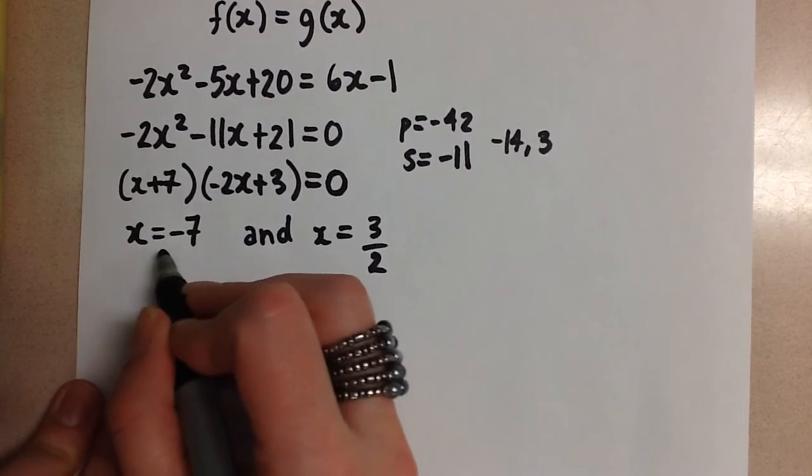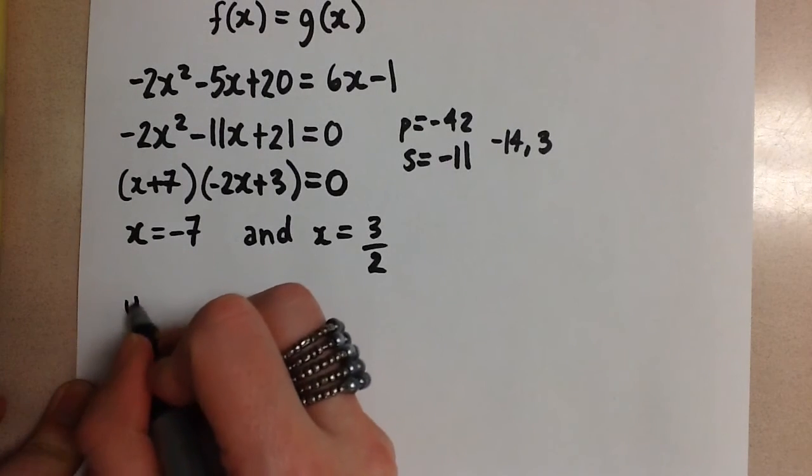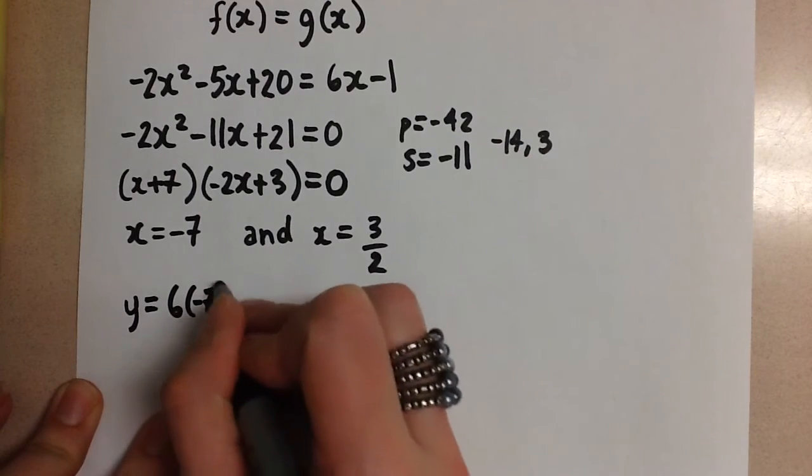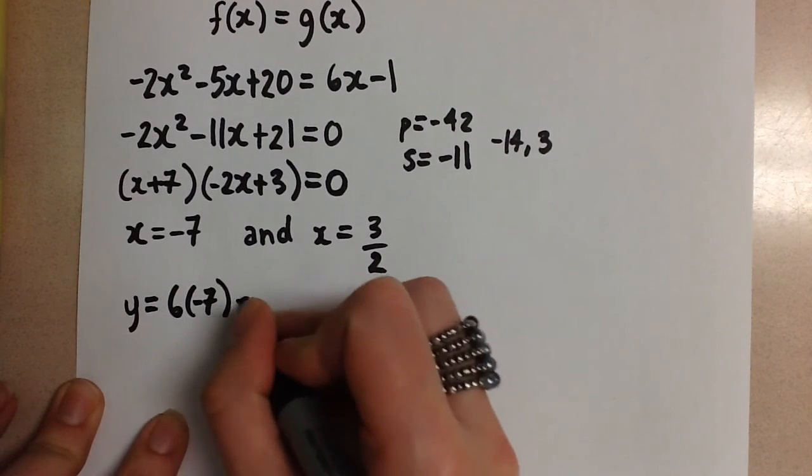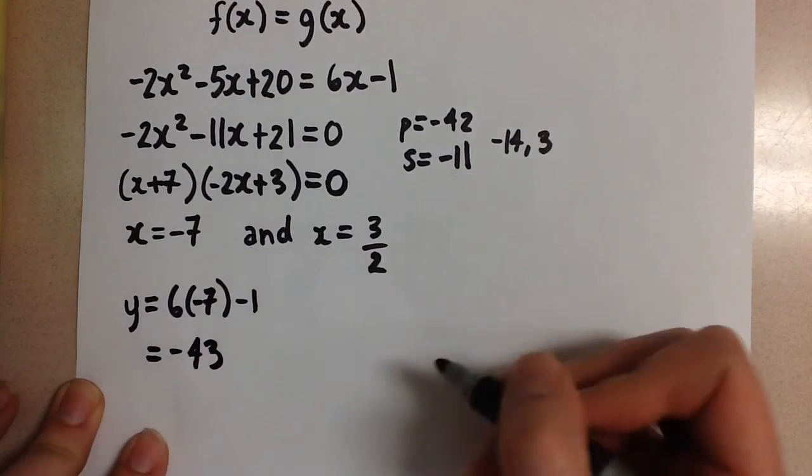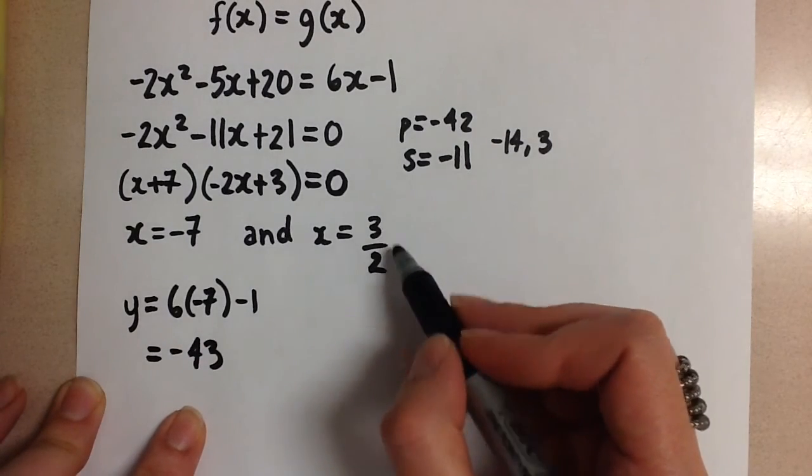So let's go back here. Then if x is negative 7, the corresponding y value is going to be 6 times negative 7 minus 1. And this gives us a y value of negative 43.